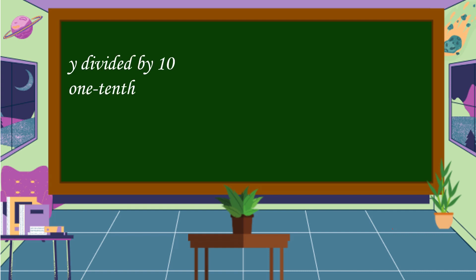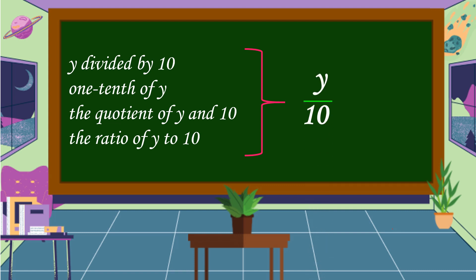Y divided by 10, one-tenth of Y, the quotient of Y and 10, the ratio of Y to 10. The algebraic expression of all these phrases is Y over 10.